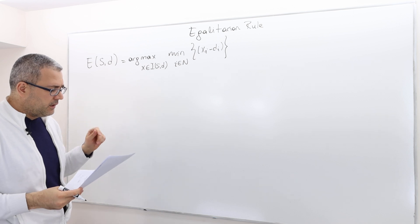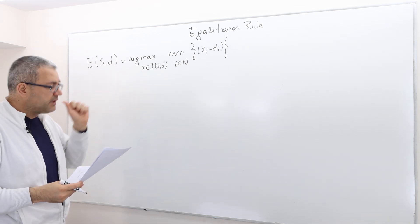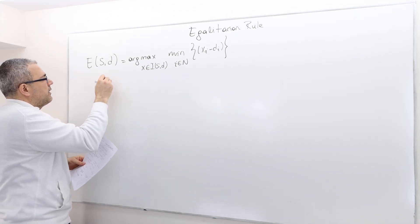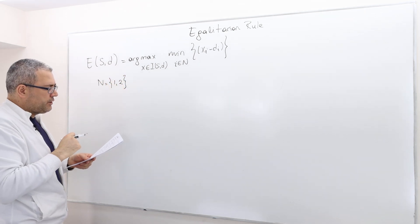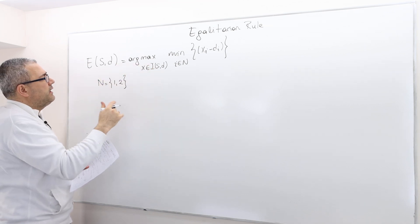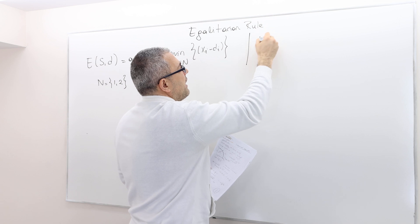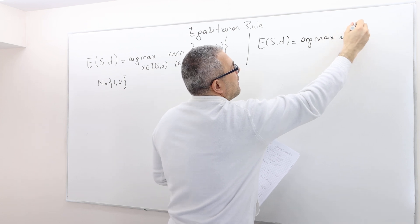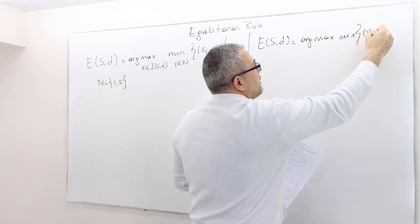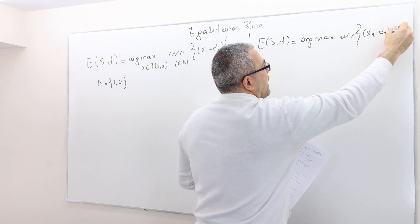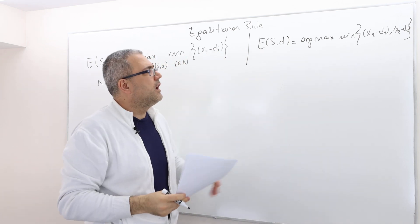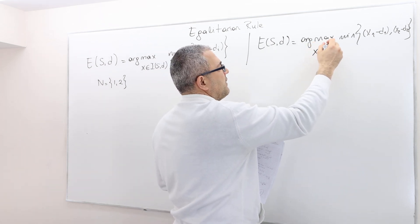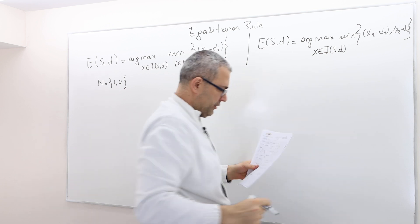In the numerical example I have two players, player one and player two. So in this case the egalitarian rule is arg max min — it's basically minimizing either x1 minus d1 or x2 minus d2, whichever is the min, and then I maximize by choosing x from the individually rational payoff vectors.